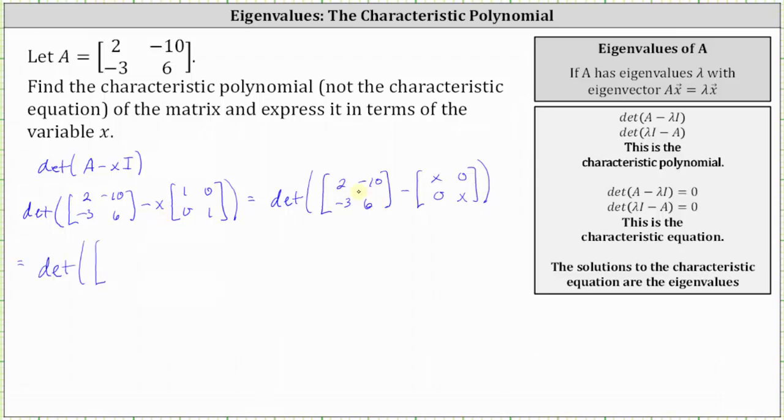The first entry is two minus x. The second entry in row one is just negative 10. The first entry in row two is just negative three. And the second entry in row two is six minus x.